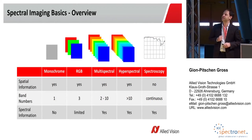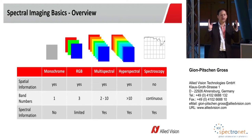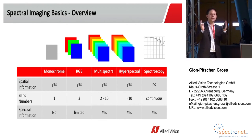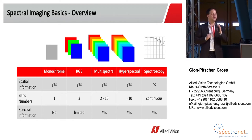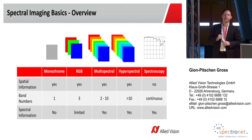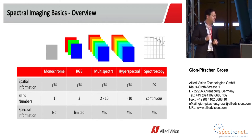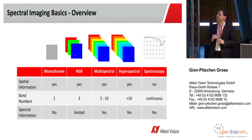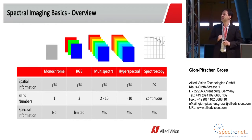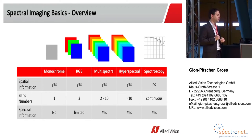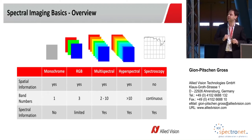If we have a monochrome sensor, we only have sensitivity within a certain range but cannot distinguish any wavelengths, so we have no spectral information. On an RGB sensor where we have overlapping band passes, we have only very limited potential for spectral information — we can differentiate some colors, but not much more.